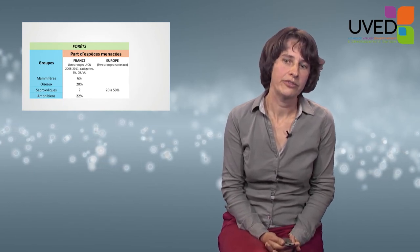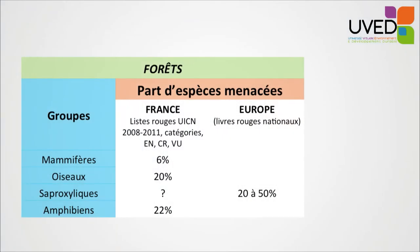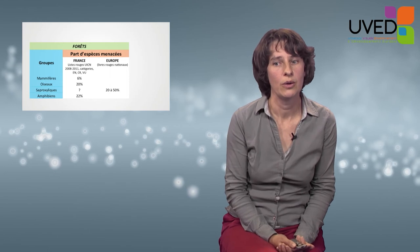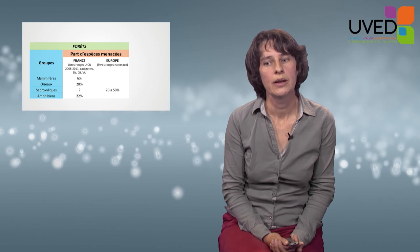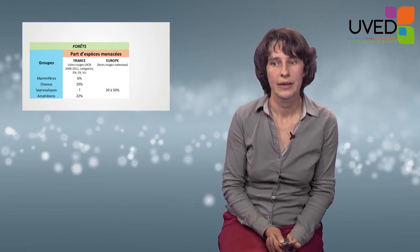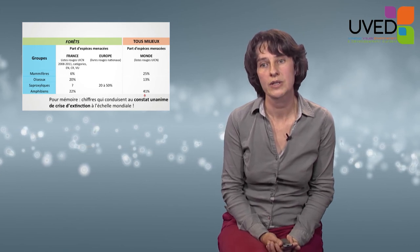In continental France, looking at forest species, according to the 2010 red lists, among forest mammals, 6% are endangered — belonging to EN (endangered), CR (critically endangered), or VU (vulnerable) categories from the International Union for Nature Conservation. For forest birds, 20% of species are threatened according to the same criteria. For saproxilic species — those depending on dead wood throughout their lives — we don't have data, but our European neighbors report figures ranging between 20 and 50% of saproxilic species being endangered. For amphibians, 22% are threatened. These figures should not be disregarded, especially when compared with those across all environments, which lead us to observe that we are facing an extinction crisis.